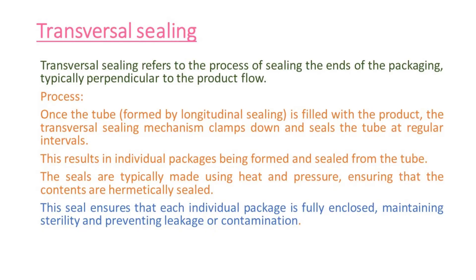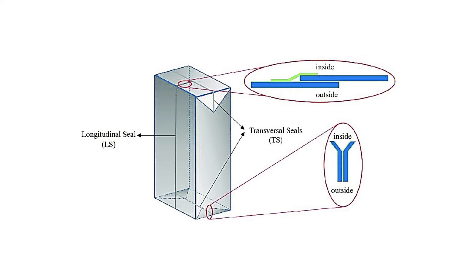Transversal sealing refers to the process of sealing the ends of the packaging, typically perpendicular to the product flow. Once the tube is filled with the product, the transversal sealing mechanism clamps down and seals the tube at regular intervals. This results in individual packages being formed and sealed from the tube. The seals are typically made using heat and pressure, ensuring that the contents are hermetically sealed. This seal ensures that each individual package is fully enclosed, maintaining sterility and preventing leakage or contamination. Here in the image, you can see how these seals are formed.